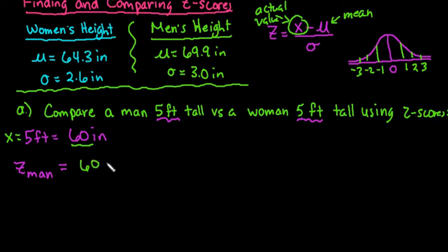So I would do 60 minus, and for men's, I would look at the men's height of 69.9, divided by 3. And then you would just simply plug this into your calculator, and when you do this, you get negative 3.3.